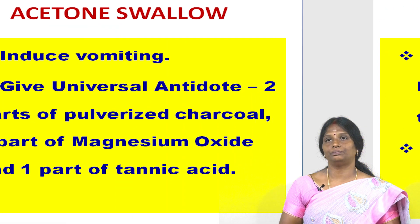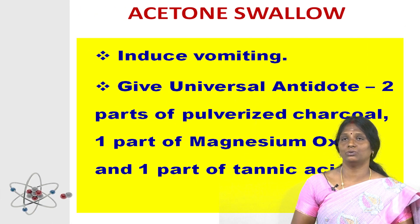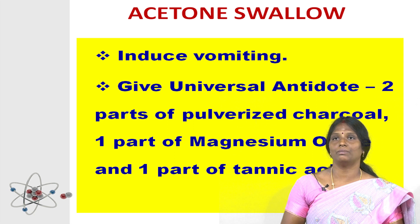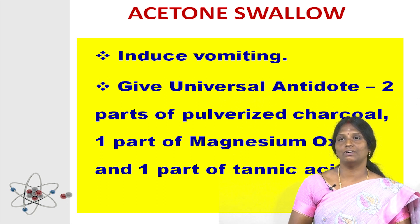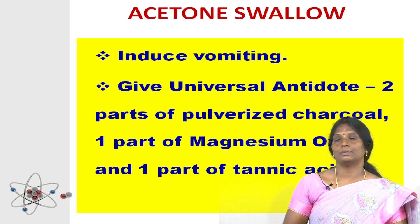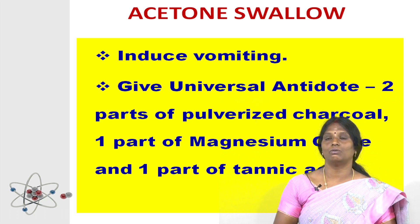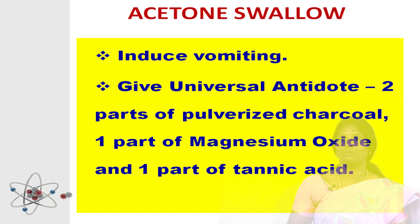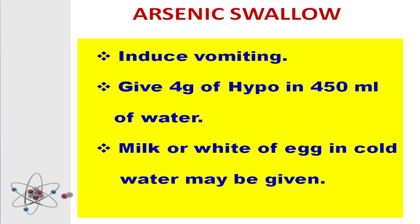Next, acetone. When we swallow acetone, we have to induce vomiting, then give the universal antidote. The universal antidote consists of two parts of pulverized charcoal, one part of manganese oxide, and one part of tannic acid. Next, when we swallow arsenic, barium, mercury, and lead compounds, we have to induce vomiting, then give 4% hypo solution in 450 ml of water.